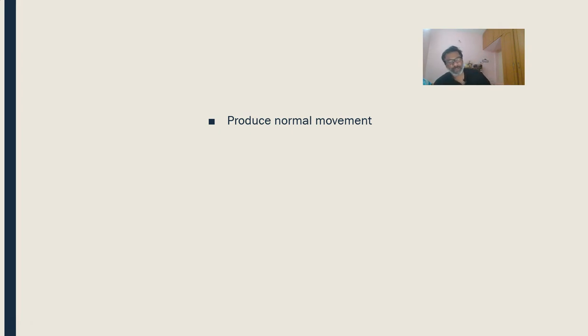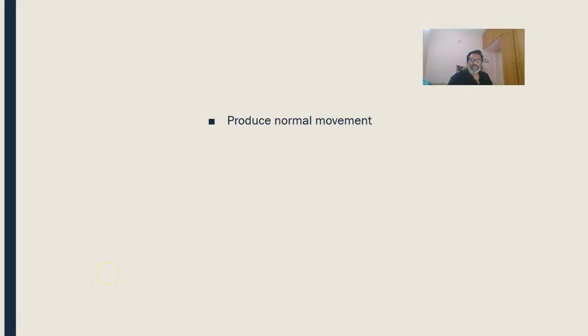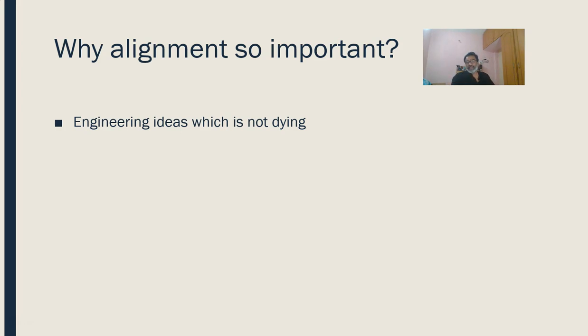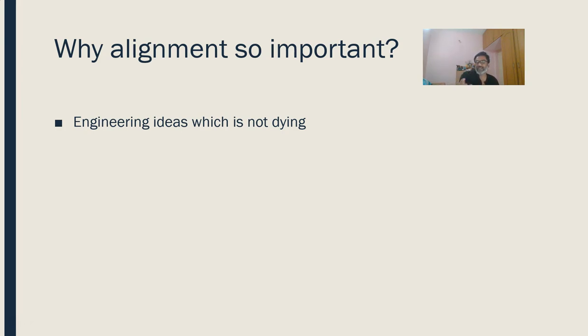People might say that we are doing task-oriented and functional movement, but at the heart of NDT is trying to do normal movement. They keep saying they want to do normal movement — now they also add functional movement — but at the core it is normal movement. In the earlier days of Bobath there were two ideas: one was that spasticity or increased tone is stopping you from normal movement, and the other was midline alignment. They were so fascinated with midline alignment.